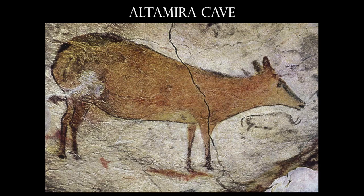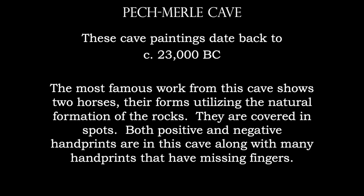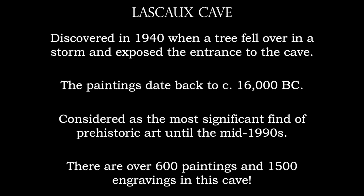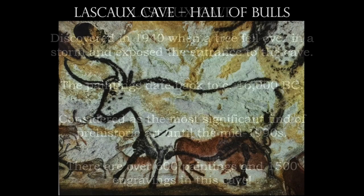Most cave figures are two-dimensional and rely heavily on outline. We also have some images from Pech Merle, where they actually use rock outcroppings to form the figures. The Cave of Lascaux is among the most famous — today considered the second most famous cave find. First discovered in 1940, these cave paintings date back to around 16,000 BC, and this is also the home of the famous Hall of Bulls.